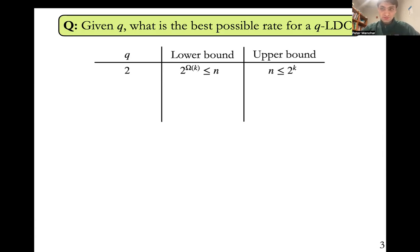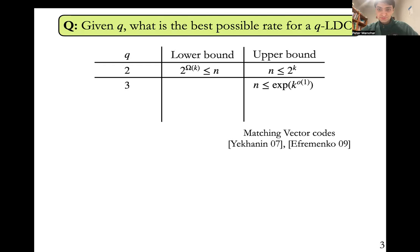Now let's go to q equals three. Here there is an interesting upper bound. There's a construction called matching vector codes, due to Yekhanin and Efremenko, which shows that there is in fact a three-query locally decodable code that has block length n that's sub-exponential in k. Notice that this is strictly below the lower bound for q equals two. So this shows that the third query that we allow the code to use is actually allowing us to make some strict improvements over the case when q equals two.